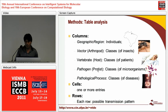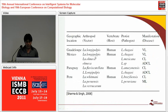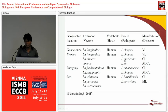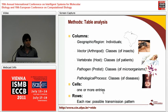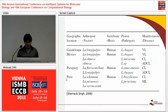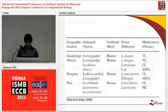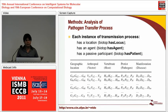In each cell we can see more than one entry, whether for vectors, diseases, or countries. In our case, each row is a possible transmission pattern, as it describes the interaction between the vector, the pathogen, and the host in a specific country.